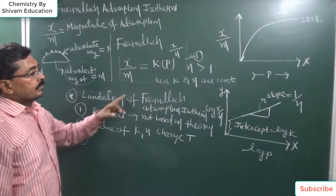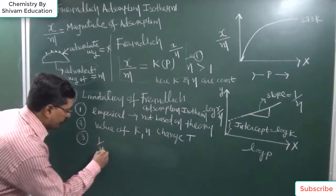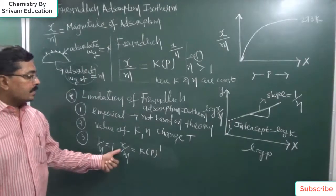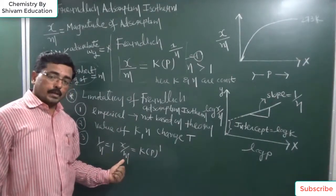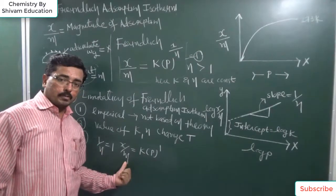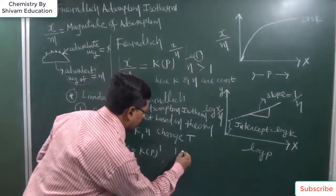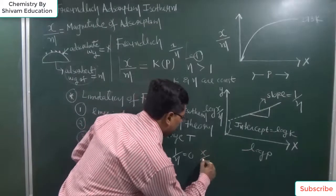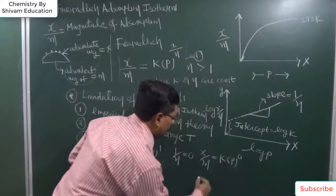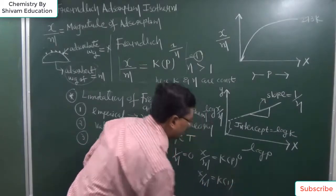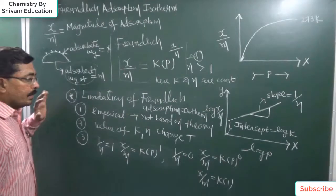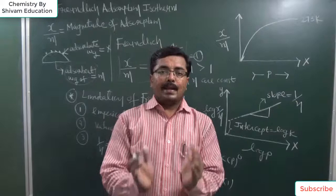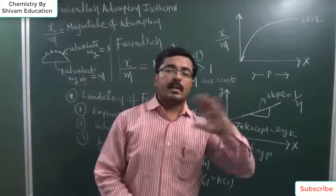At high pressure, 1 upon n approaches 0, so x by m becomes k into p raised to 0, which equals k. This means the magnitude of adsorption becomes independent of pressure. At low pressure, when 1 upon n equals 1, x by m is directly proportional to pressure. Therefore, the Freundlich adsorption isotherm is not applicable at very high pressure — it is applicable only within a certain range of pressures.